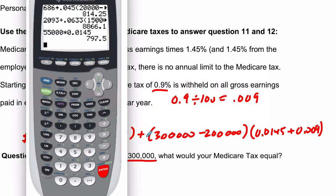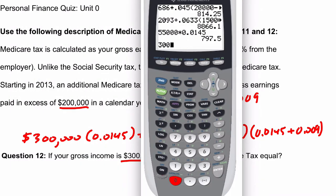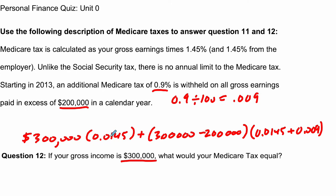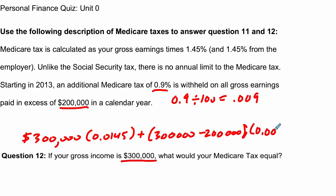Let's calculate this and see what we get. Wait — I made another mistake. I counted 1.45% twice: once on the full amount, and then again on the excess. That's incorrect — that would be double taxing. So on this part right here, we're paying only an additional 0.009%. We don't need to add 0.0145 again. If I had said you get taxed 1.45% on the first $200,000 and then a combined percentage on the next $100,000, that would be correct. But since I've already taxed everything at 1.45%, now it's just an additional 0.009 on the amount left over.